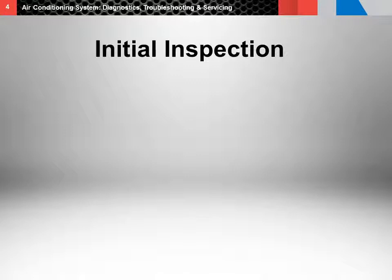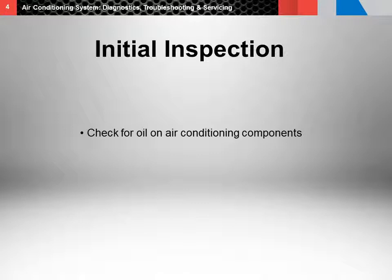Now you're ready to move forward with the inspection. Let's go through a checklist of components. First, check for oil on air conditioning components — this typically indicates a leak. If oil is present on a component, confirm the potential leak with an appropriate leak detector. If a leak is found, repair it before proceeding. It's extremely important to inspect the operation of the heater and its components. In many vehicles, the air conditioner and heater share a plenum and any malfunctioning heater parts may impact air conditioning performance.